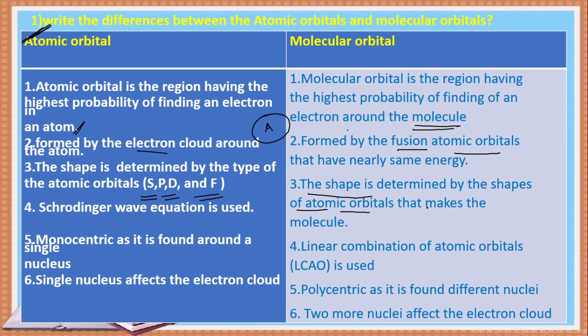The geometry of a molecule is obtained from its constituent atoms. A molecule is made up of the combination of atoms, so when atomic orbitals of similar geometry approach and overlap, they give a particular or specific shape to the molecule. Therefore, the shape of the molecular orbital is obtained from the atomic orbitals.